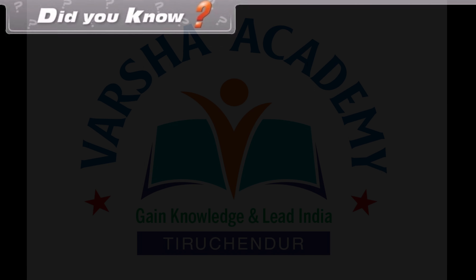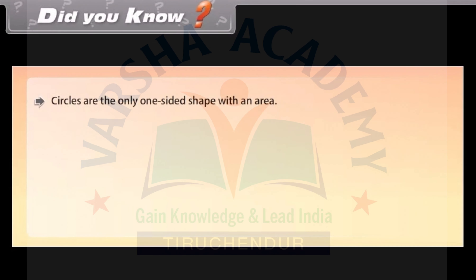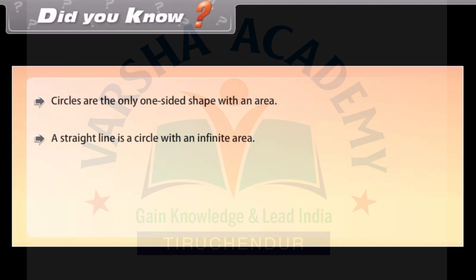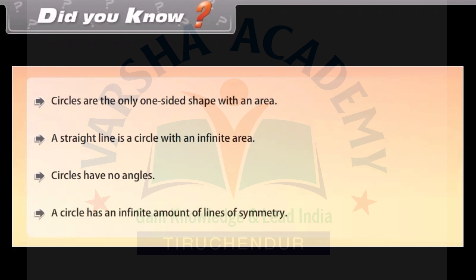Did you know: circles are the only one-sided shape with an area. A straight line is a circle with an infinite radius. Circles have no angles. A circle has an infinite amount of lines of symmetry.